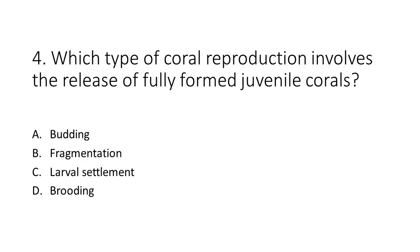Number 4. Which type of coral reproduction involves the release of fully formed juvenile corals? A. Budding. B. Fragmentation. C. Larval settlement. D. Brooding.